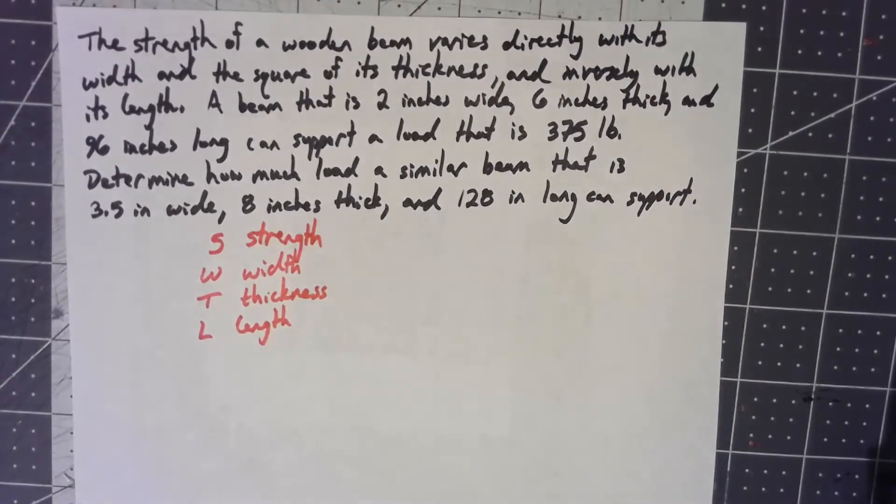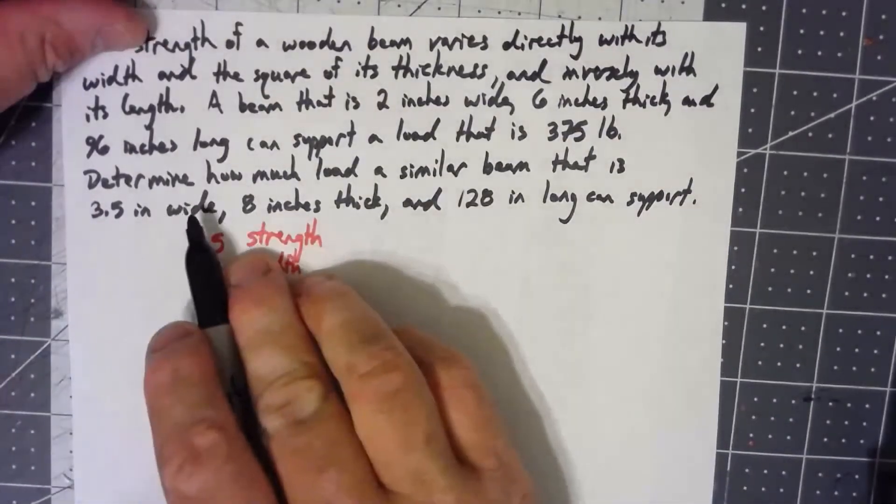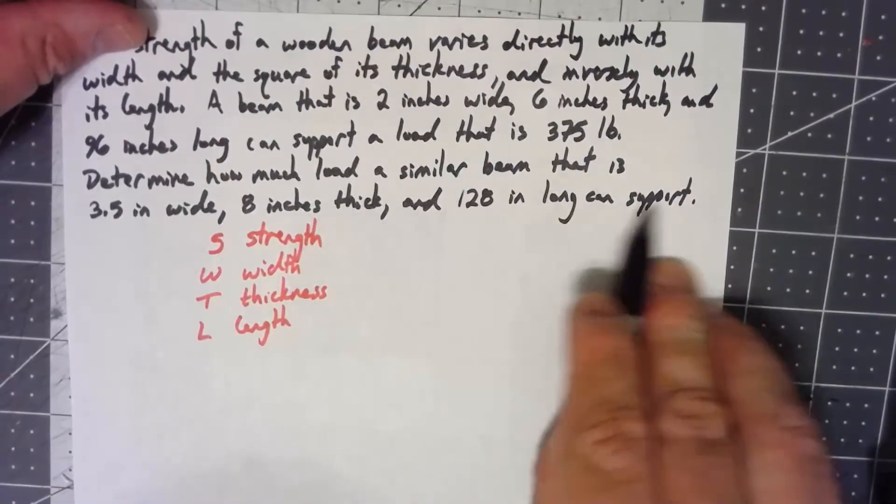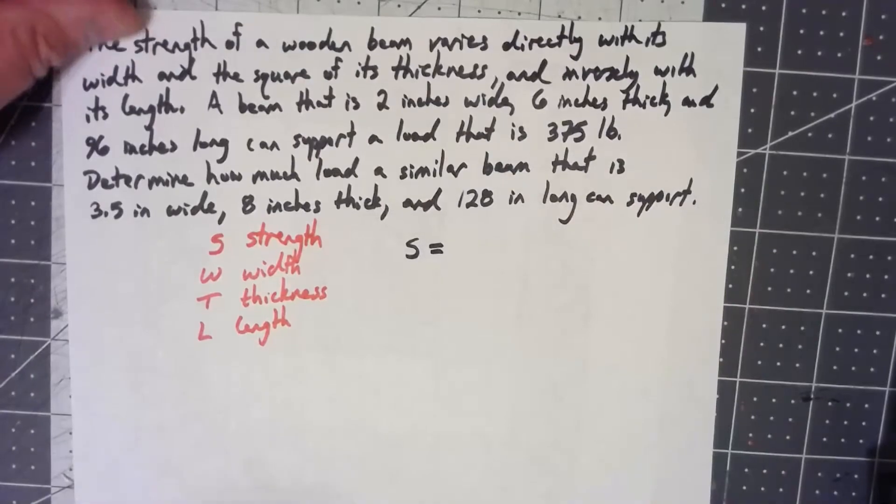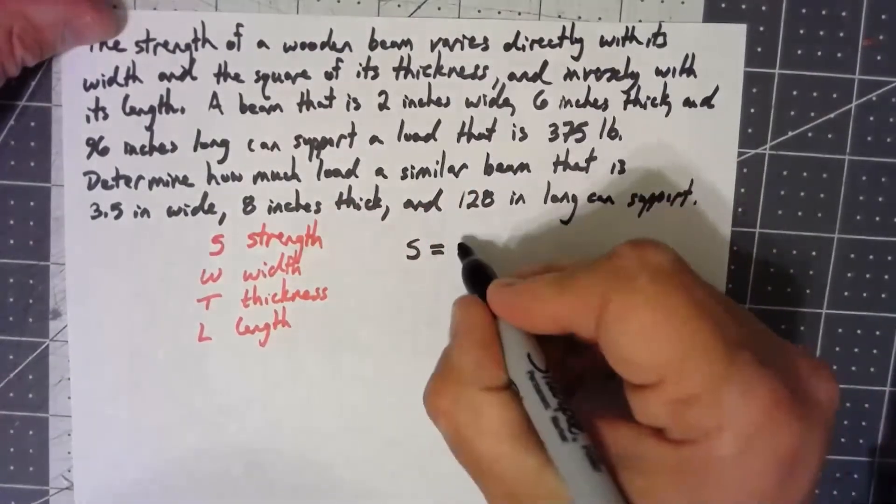So let's try and set up the equation. And really, it's just a matter of taking it step by step. Consider each one separately here. You only need one constant though. In the end, I'm trying to figure out the load or the support, the strength. So I'm trying to find an equation for S. It says it varies directly with its width.